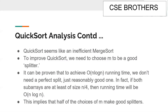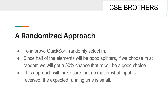If we split the array evenly with appropriate pivot selection, we achieve O(n log n) complexity; otherwise we get O(n²). It can be proven that we don't need a perfect splitter — if both subarrays are at least of size n/4, the running time will be O(n log n). This implies that half of all choices of m make good splitters.